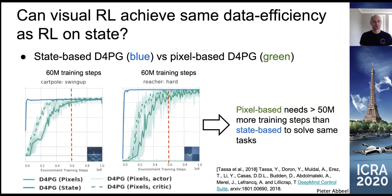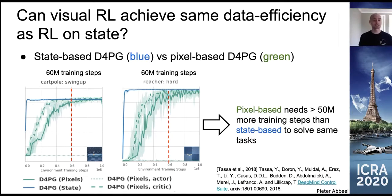Let's take a look at the prior state-of-the-art. The plot on the left is for a cartpole swing-up task. We have two types of learning curves — both use the same reinforcement learning method, D4PG. In blue, D4PG has access to state variables directly; in green, D4PG only has access to pixels. The same applies to the graph in the middle for a reacher task. In both cases, the learning curve rises much more quickly when having access to state — higher is better, meaning higher reward.